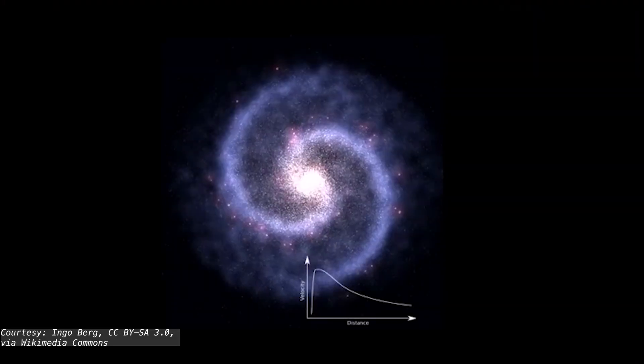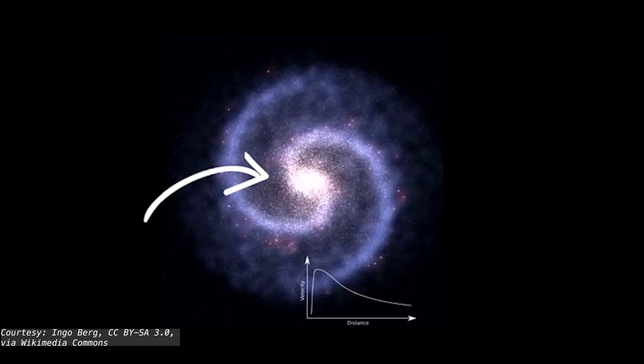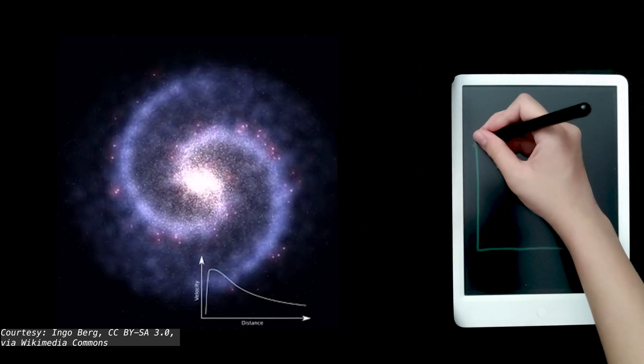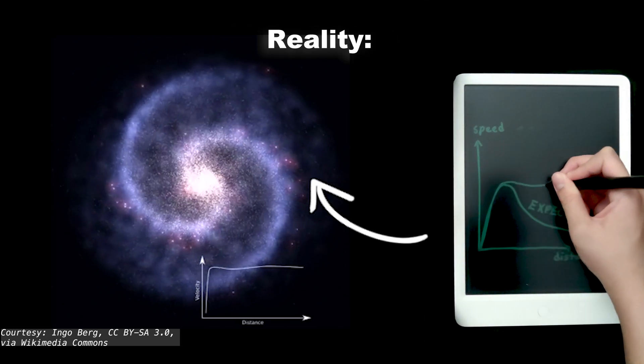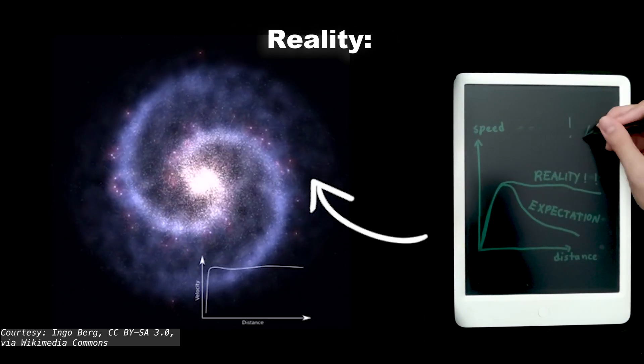If you take a look at a galaxy, you see that it's bright at the center, meaning that's where all the mass is concentrated. So our theory of gravity tells us that as you get further out, the rotation should get slower. But in reality, the outskirts of galaxies are moving way faster than predicted.